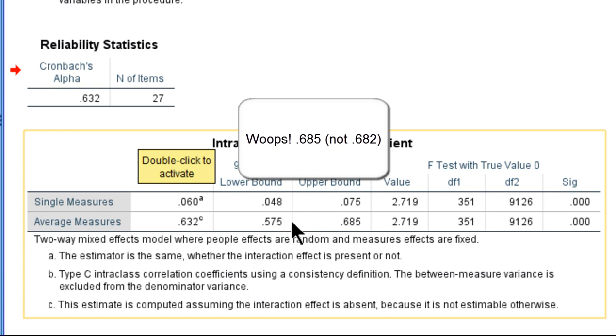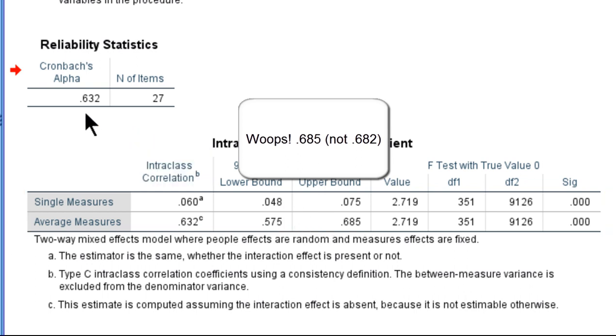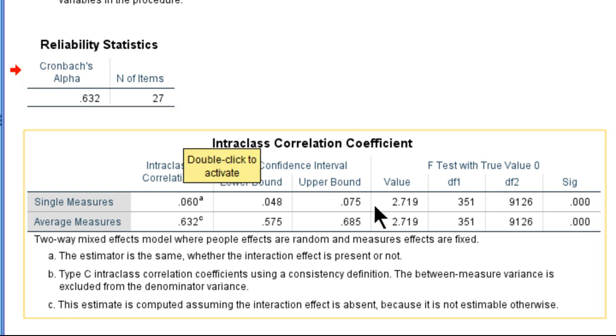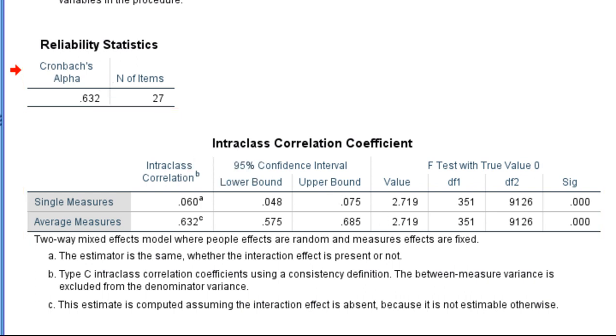So those are the 95% confidence intervals that you can report with your Coefficient or Cronbach's Alpha in a particular study. So that is how you can estimate 95% confidence intervals or any confidence interval you want for a Coefficient Alpha through the Intraclass Correlation in SPSS.